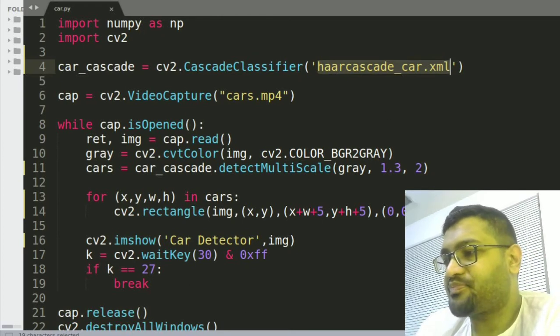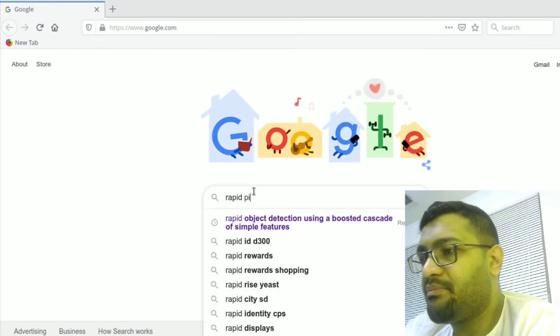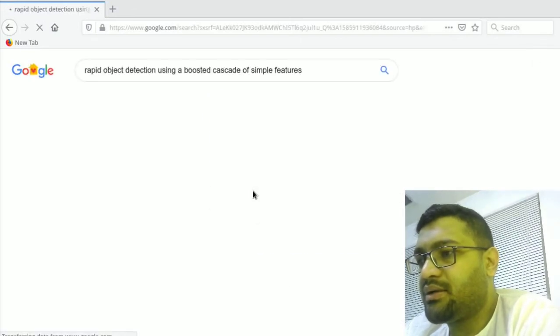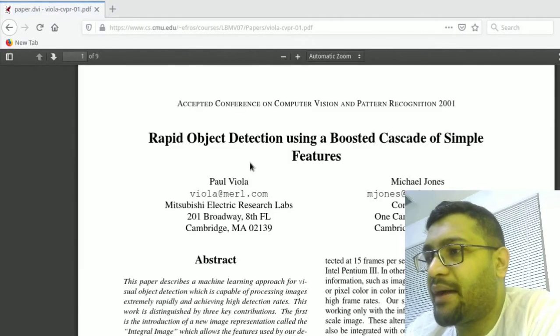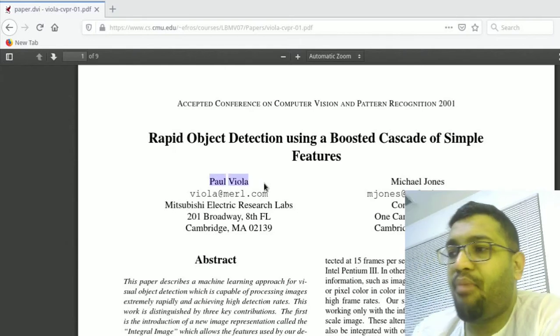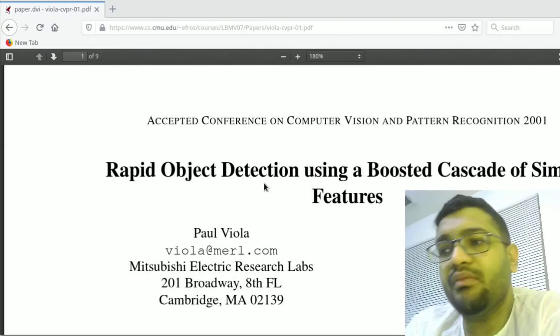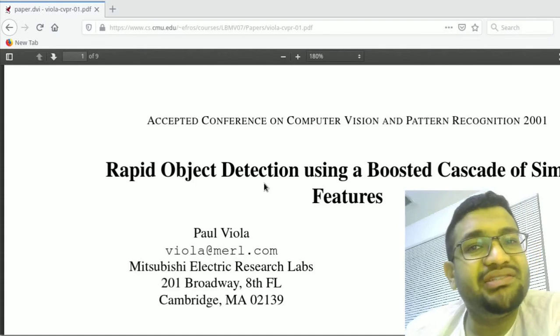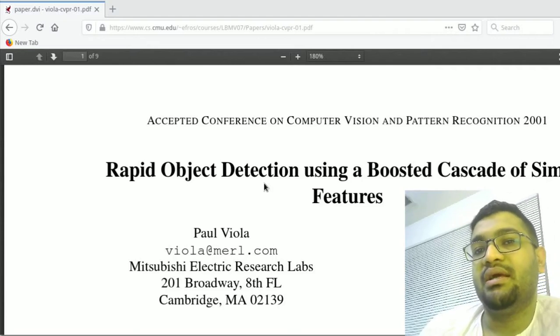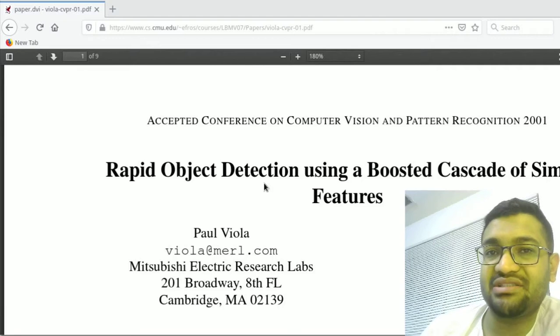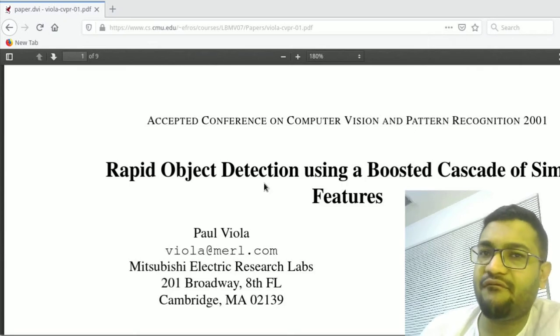I do want to explain that, and in order to explain that let's open up the rapid object detection paper. So here we have this paper opened up and it's none other than Paul Viola and Michael Jones. So what is this about basically? These two guys back in 2001 created this algorithm and they named this algorithm Haar cascades. What it does is they wanted to build some sort of object detector, a very fast object detector.